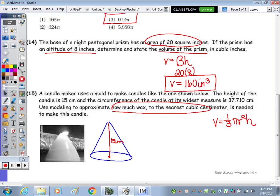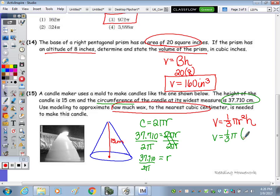Volume equals one-third pi r squared h. We're not given the radius, but we're told the circumference is 37.710. Circumference is equivalent to 2 pi r, so substituting 37.710 equivalent to 2 pi r. Divide by 2 pi, those cancel out, and we have a radius of 37.710 over 2 pi. I'm going to leave it exact and we'll do the calculation on the calculator. So volume equals one-third pi times 37.710 over 2 pi squared times 15.